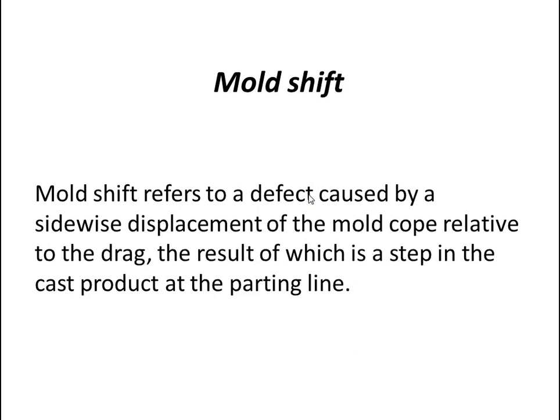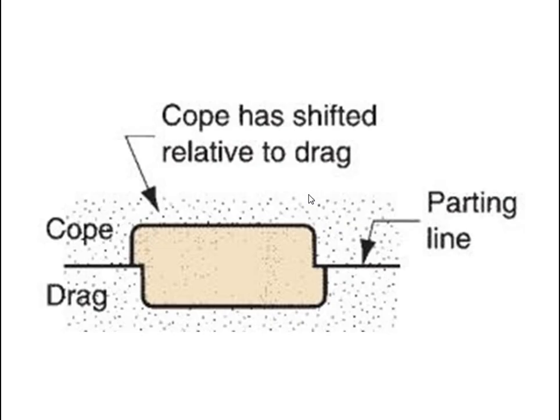Mold shift refers to a defect caused by a sideways displacement of the mold cope relative to the drag, resulting in a step in the cast product at the parting line. The upper portion is the cope and the lower portion is the drag, with a parting line between them. Here, the cope has shifted relative to the drag, which is a very significant defect.